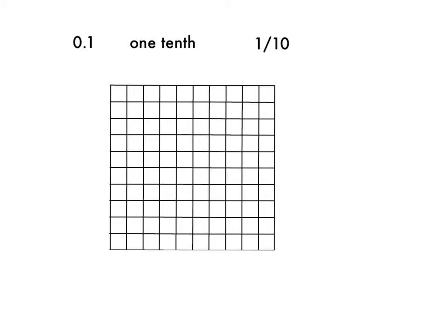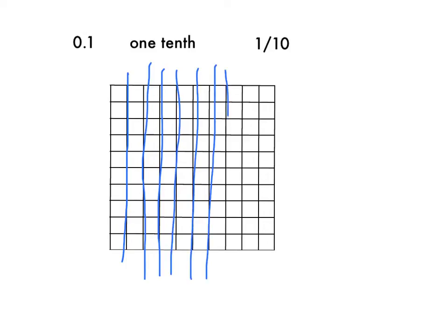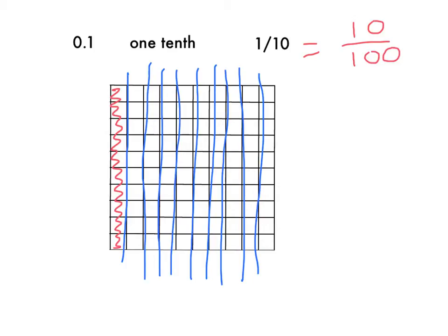First we will be representing the decimal one-tenth, which is also the same as the fraction one-tenth. If I want to represent one-tenth on this grid, which represents one whole, I can see that it is divided into ten equal size sections, which means that one-tenth would be shading in just one column or one of those sections. That is also the same as ten-hundredths, because there are a hundred squares inside of this whole, and I've shaded in ten of them.